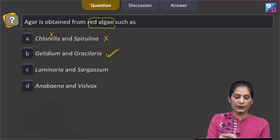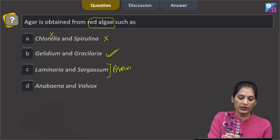Laminaria and sargassum, both are brown algae. So definitely agar cannot be obtained over here.